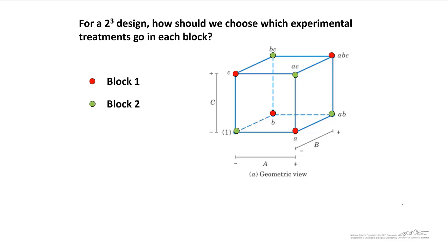Let's take a look at a two-cube design. How should we choose which experimental treatments go in each block? Well, it turns out that this design with the blocks on opposite corners of this cube is the most efficient design.